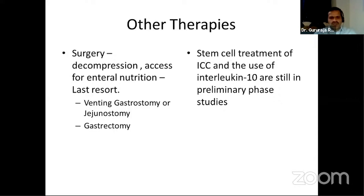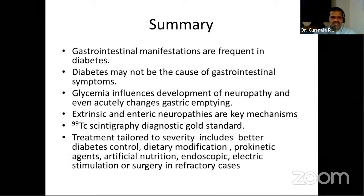Surgery is the last resort for decompressing the stomach or providing access to enteral nutrition, such as venting gastrostomy or jejunostomy. Gastrectomy and bypass have been tried in extreme cases. Complication risks are high. Experimental therapies include stem cell treatment targeting interstitial cell of Cajal regeneration and interleukin-10 therapy, but these remain in preliminary phases with limited success — possibly representing future treatment directions.